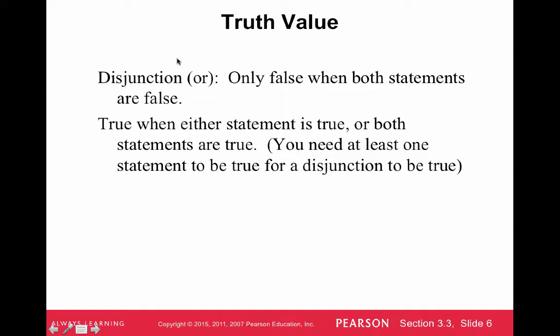A disjunction, an 'or' statement, is only false when both statements are false. It's true when either statement is true, or both statements are true — you just need at least one statement to be true for a disjunction to be true. So 'or' is less restrictive; you just need at least one of the statements to be true in order for the whole compound statement to be true.